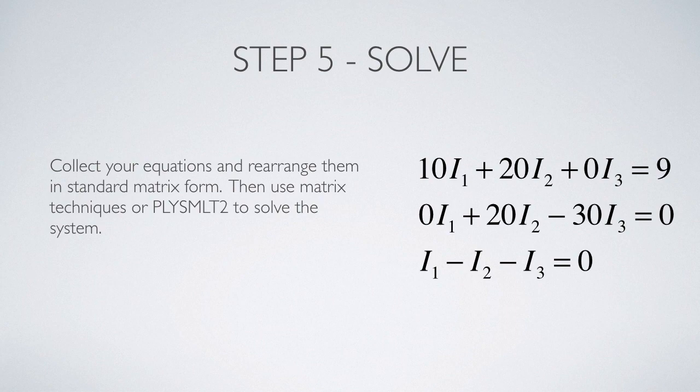Now to solve these efficiently, we can use matrix techniques. Rewrite your equations so that all of the variables on the left-hand side are in the same order along with their coefficients, and then any constant terms need to be on the right side of the equal sign. You can see that I've padded out equations one and two with zeros because I₃ doesn't appear in equation one, and I₁ doesn't appear in equation two. That's not necessary, but I thought it would be helpful.